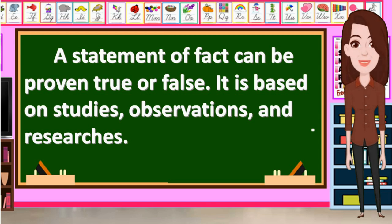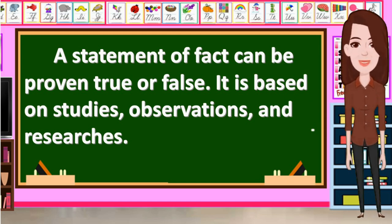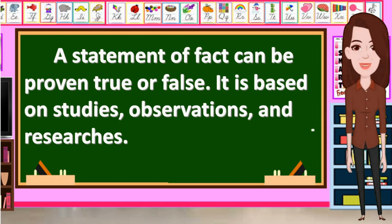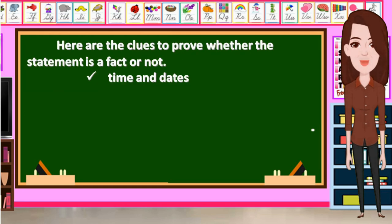A statement of fact can be proven true or false. It is based on studies, observations, and research. A fact is an idea that can be verified with evidence. It is something that is true and tells what actually happened. We can't change the fact — there is no room for difference in a fact. A fact is universal in character. Here are the clues to prove whether the statement is a fact or not.